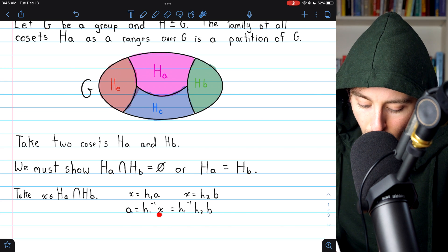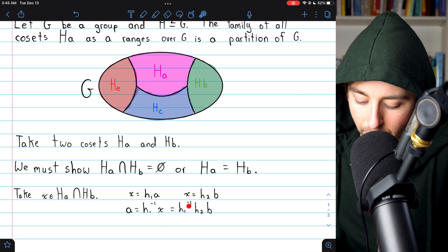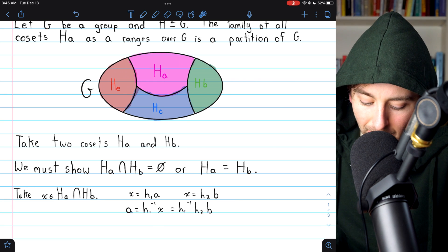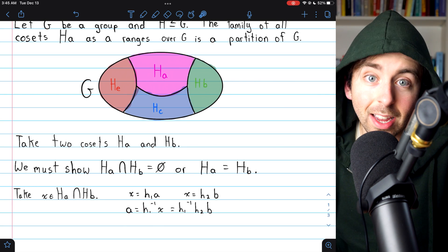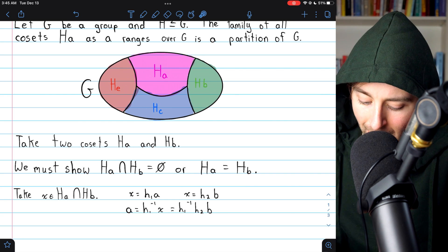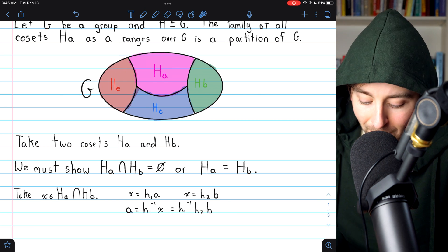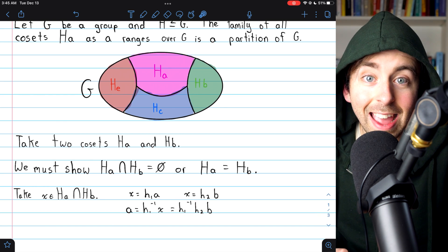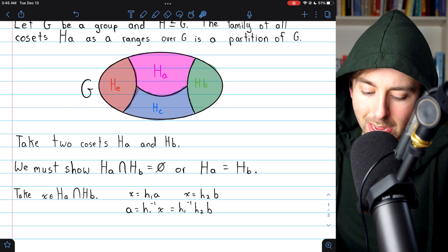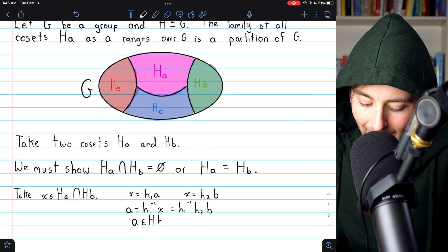So if we replace X with H2 times B, we have that A equals H1 inverse times H2 times B. And again, we can take inverses here because H is a subgroup. So we know we've got inverses. And also, because H is a subgroup, over here where we have H1 inverse times H2, well, subgroups are closed. So this also belongs to H. Thus, A is equal to some element of H times B. And thus, by definition, A is an element of the coset Hb.